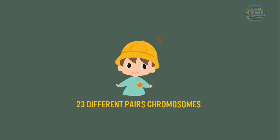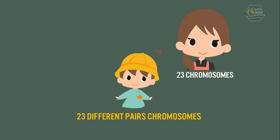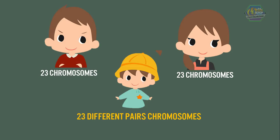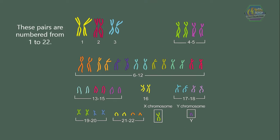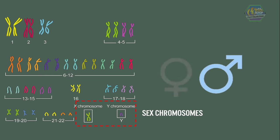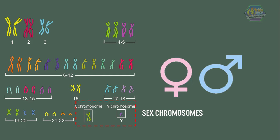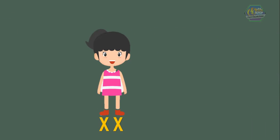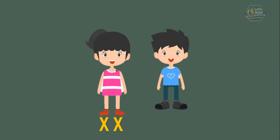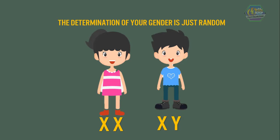We have 23 different pairs of chromosomes, and these pairs come from our parents. We all get 23 chromosomes from our mother and 23 from our father, forming 23 pairs. These pairs are numbered from 1 to 22; the extra pair is called the XY pair, or sex chromosomes, which determines if you are a boy or a girl. Girls have two X chromosomes (XX), while boys have an X and a Y chromosome (XY). Also take note that the determination of your gender is just random.